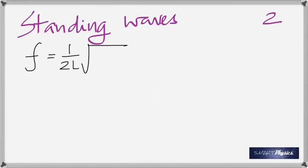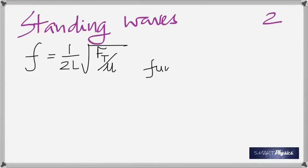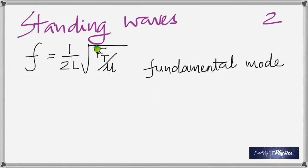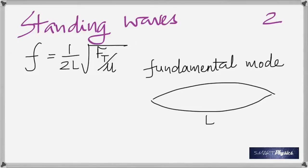The equation for the fundamental vibration of a stretched string is f = (1/2L)√(F_T/μ). It depends on three factors: tension F_T in newtons, mass per unit length μ in kg/m, and the vibrating length L. The fundamental mode means the whole string vibrates in one segment. Multiples of the fundamental frequency are called harmonics, and the number of segments equals the number of the harmonic.